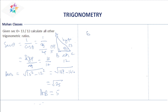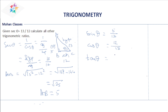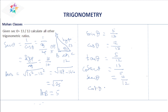With all three sides known: sin θ = opposite/hypotenuse = 5/13. Cos θ = adjacent/hypotenuse = 12/13. Tan θ = opposite/adjacent = 5/12. Cosecant θ = 1/sin θ = 13/5. Secant θ = 1/cos θ = 13/12. Cot θ = 12/5.